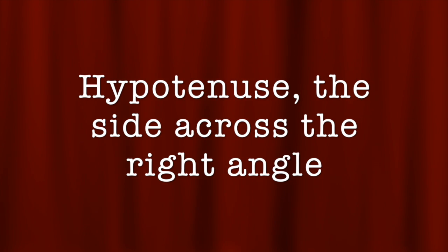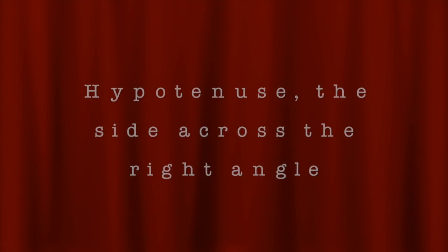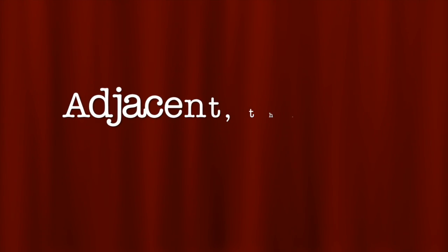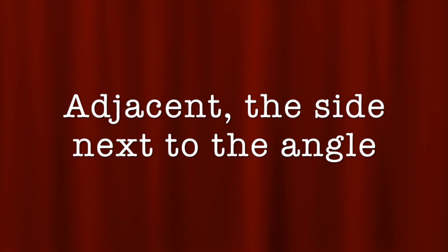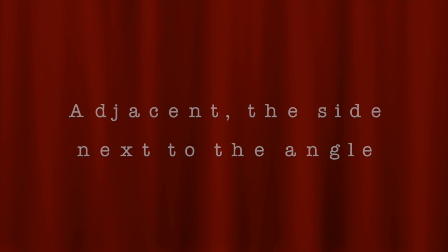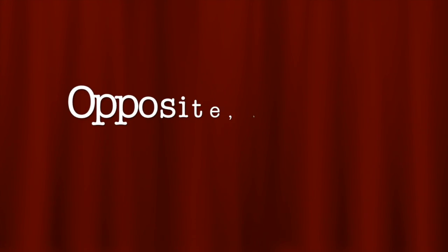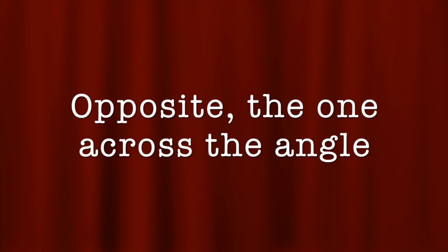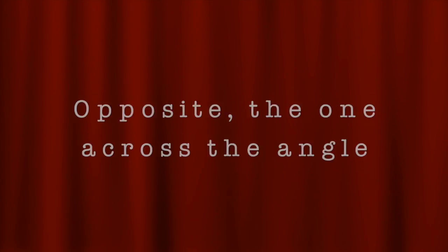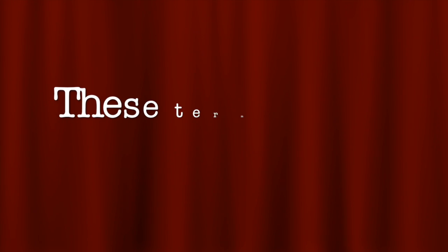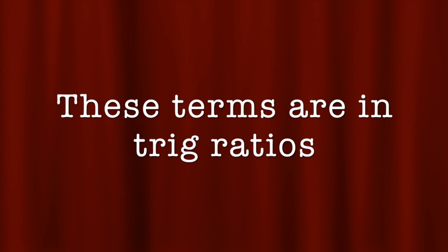Hypotenuse: the side across from the right angle. Adjacent: the side next to the angle. Opposite: the one across from the angle. These terms are interchangeable.